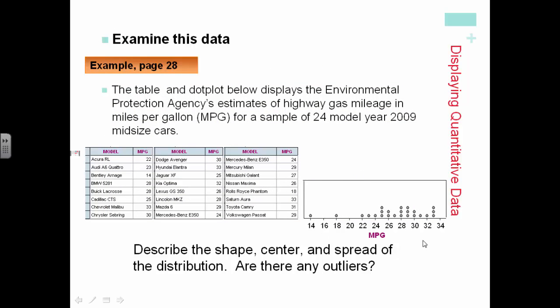As you can notice, the shape of the graph, as we look at it, has roughly a distribution around the values from 22 to 33.